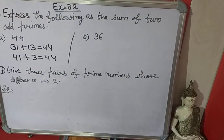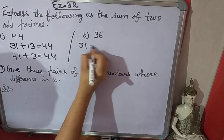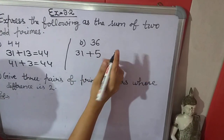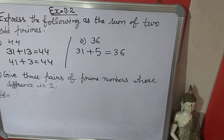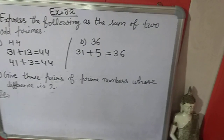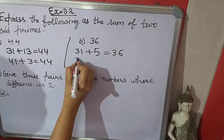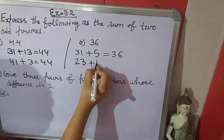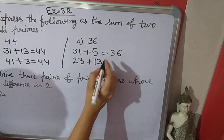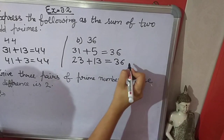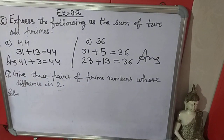For 36, we take two odd prime numbers: 31 plus 5 gives 36. So 31 and 5 are odd prime numbers. We can also take another pair: 23 plus 13 — both are odd and prime — and when we add these, 36 comes. So these are the answers.